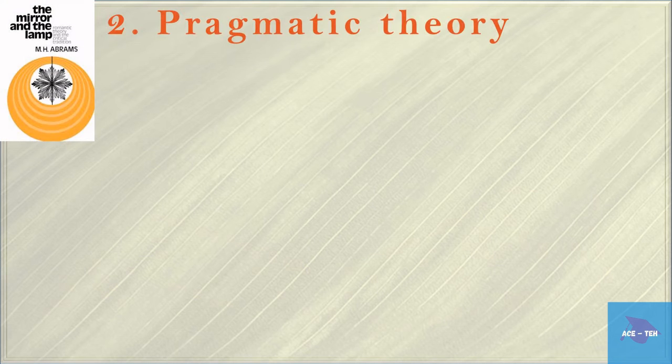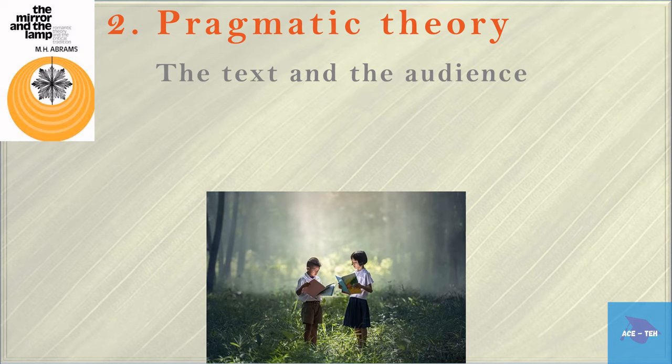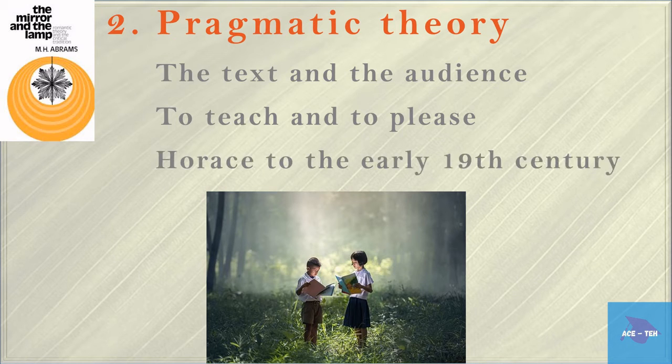The second one is pragmatic theory. The theory is concerned with the relation between the text and the audience. The focus is on the social didactic functions of art, to teach and to please. These theories were dominant from the time of Horace to the early 19th century.